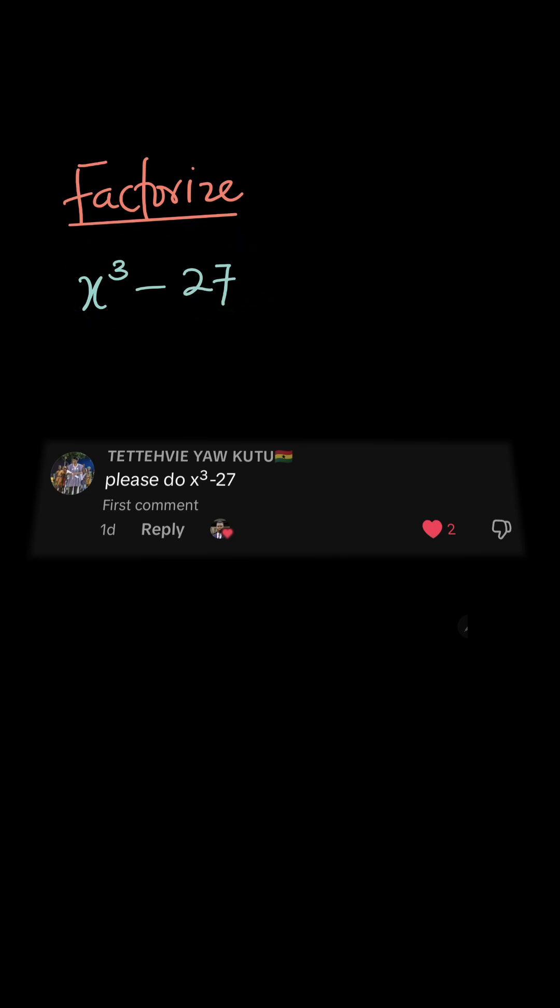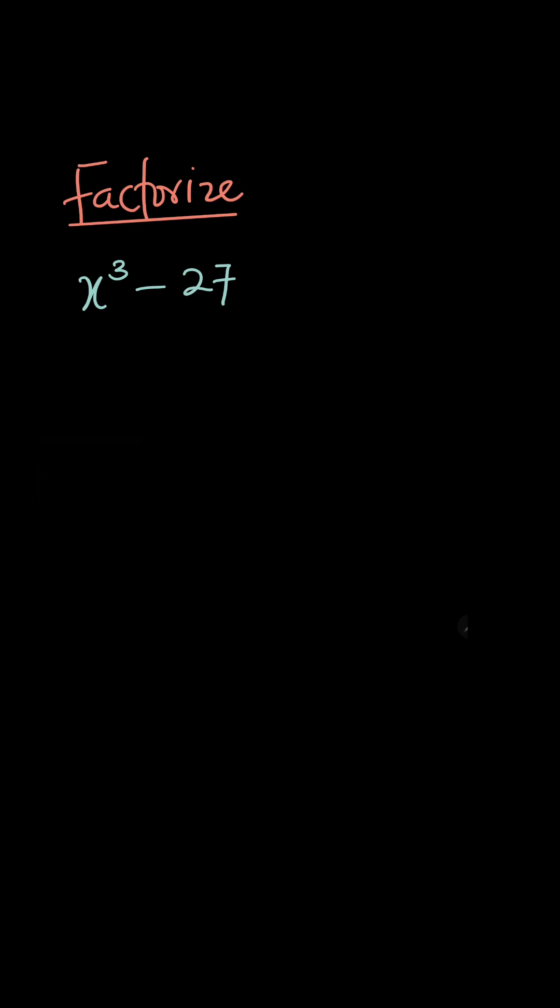So we have to factorize x cubed minus 27. Now at a glance you might say this looks like difference of two squares, because when you have difference of two squares, a squared minus b squared equals a plus b times a minus b. So when you expand this, you're going to get this.